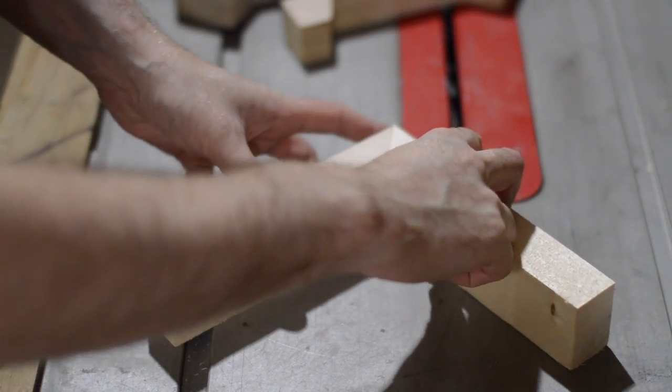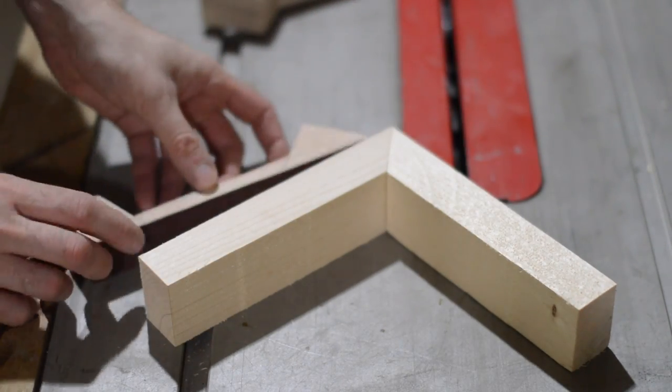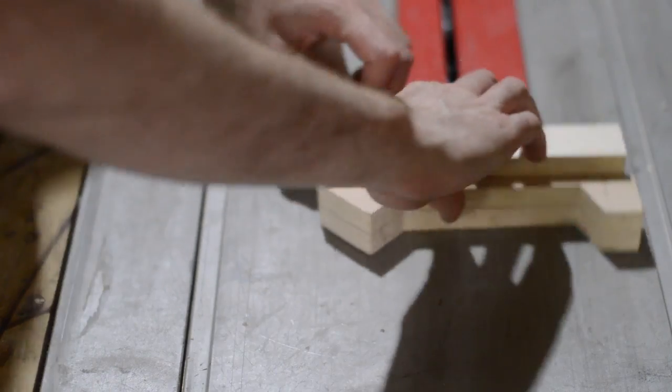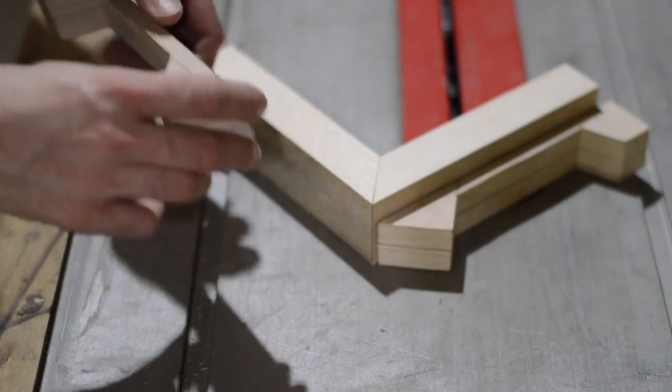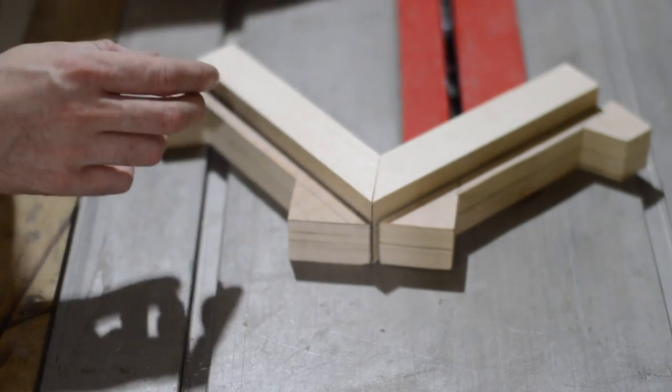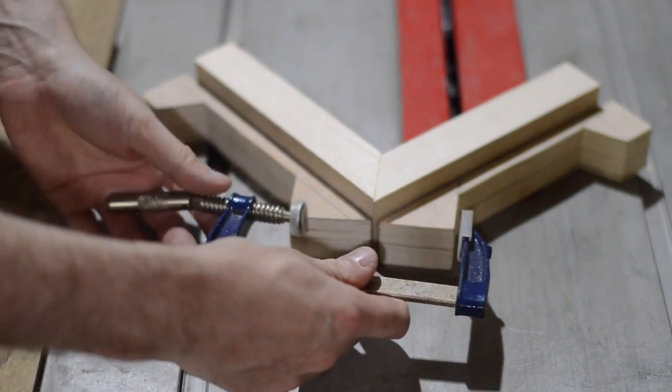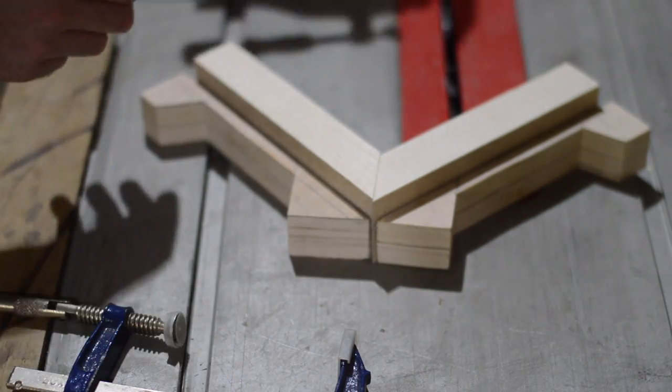So before I use them in a project next week I'll just demonstrate how they work. You put them on your workpiece and you choose the end with the angle that's going to work best for the angle you're trying to do. So I'm trying to do a 45 degree miter here, so the 45 degrees work perfectly.